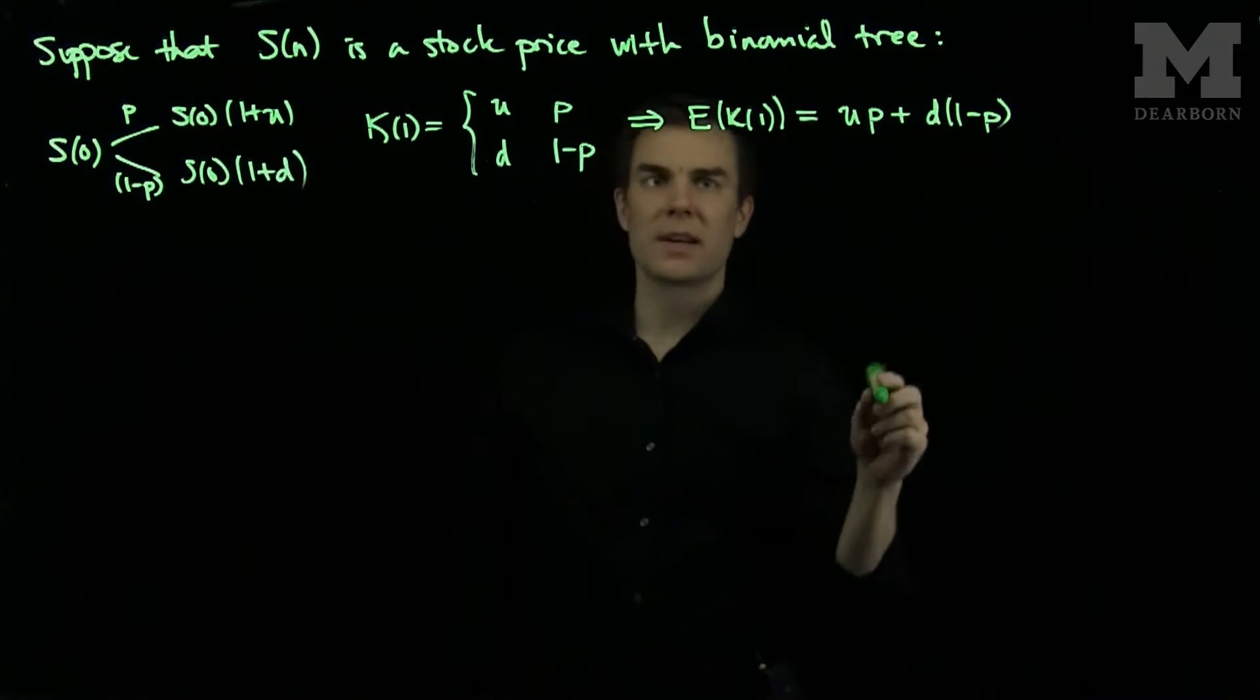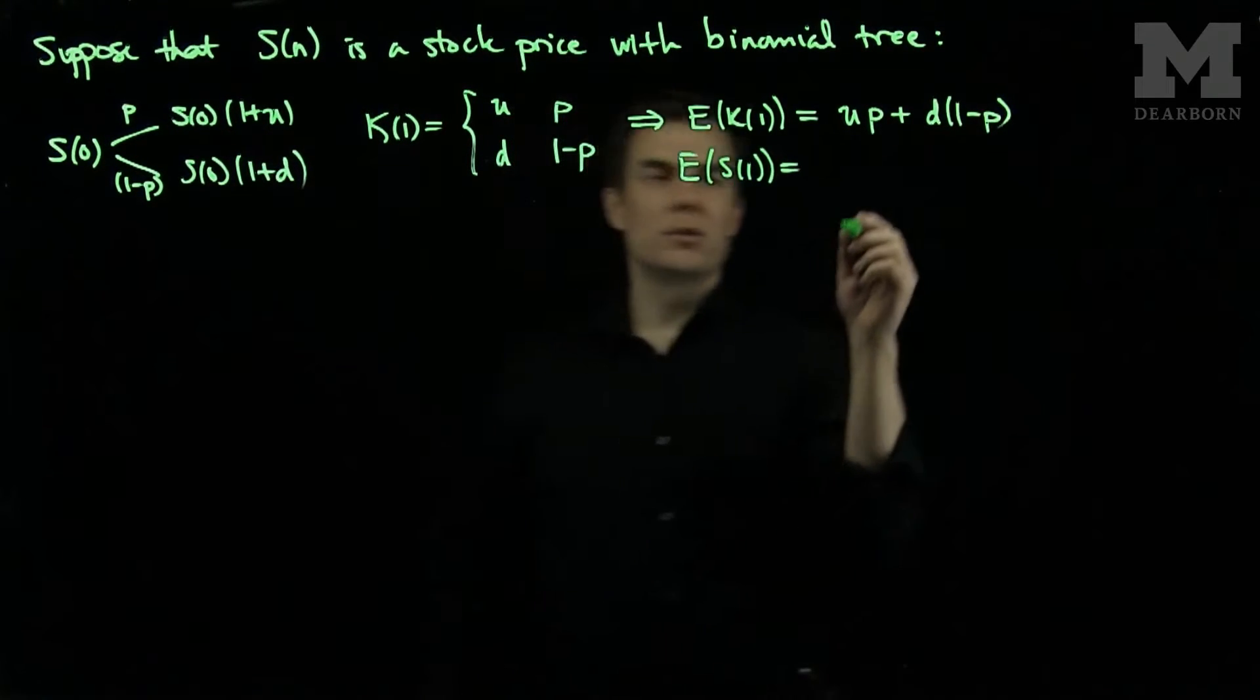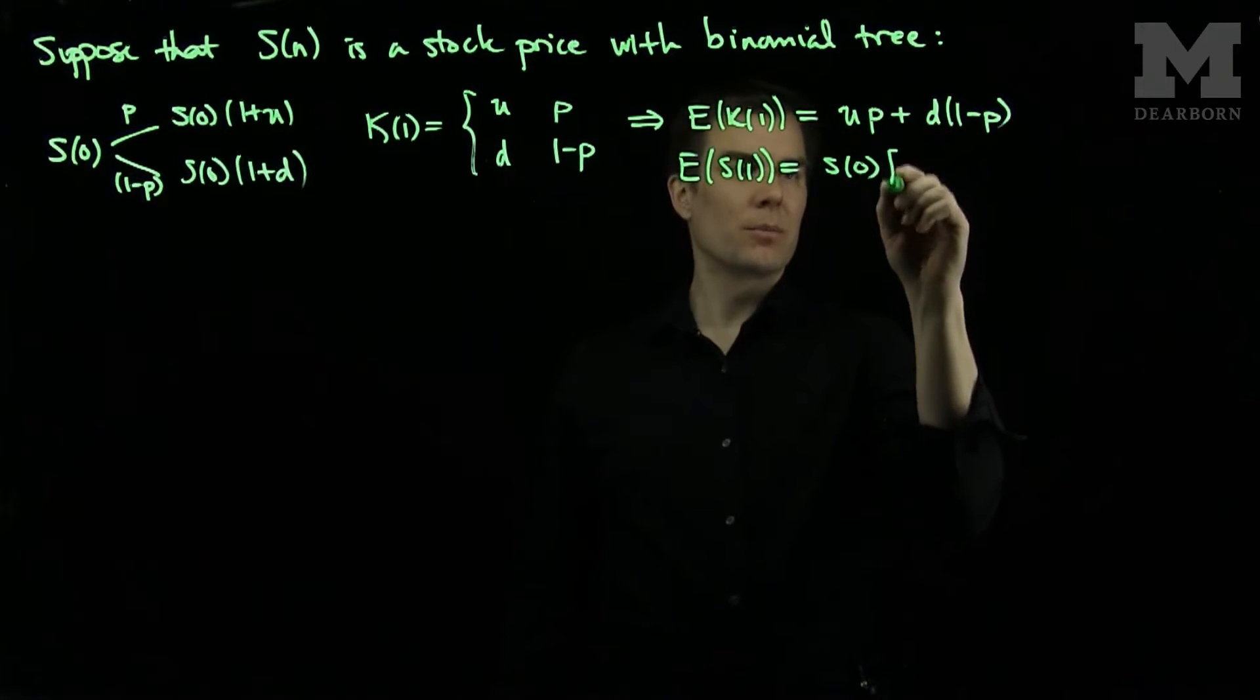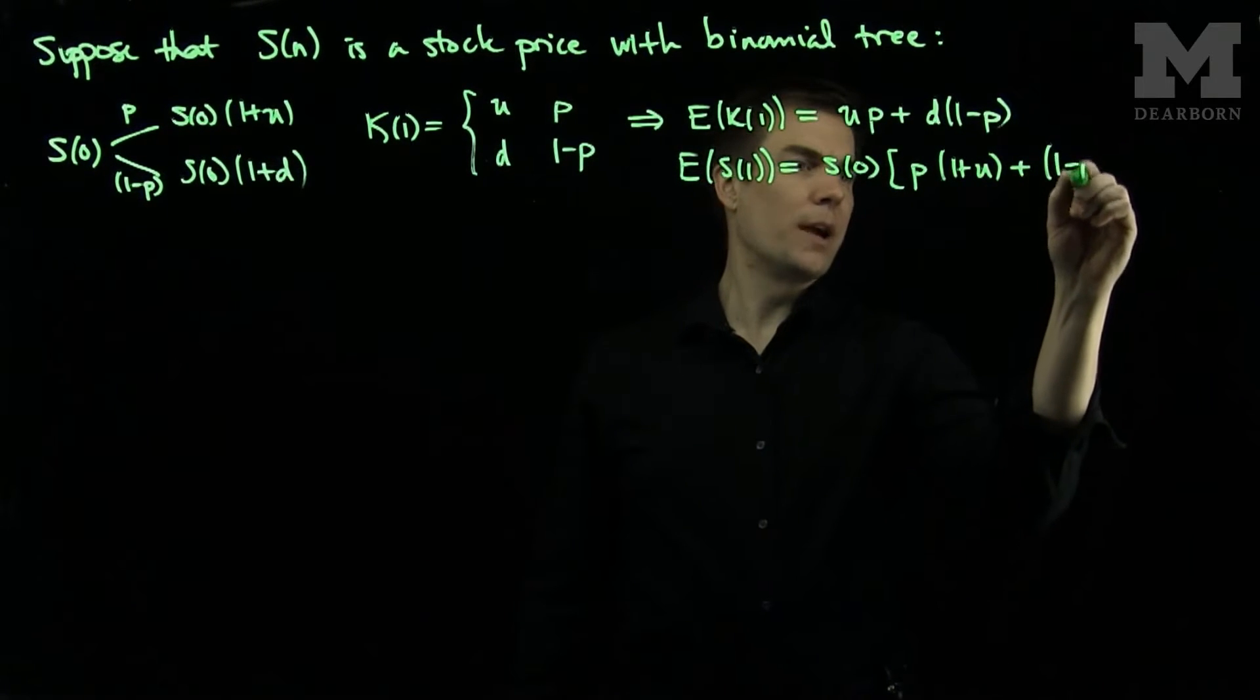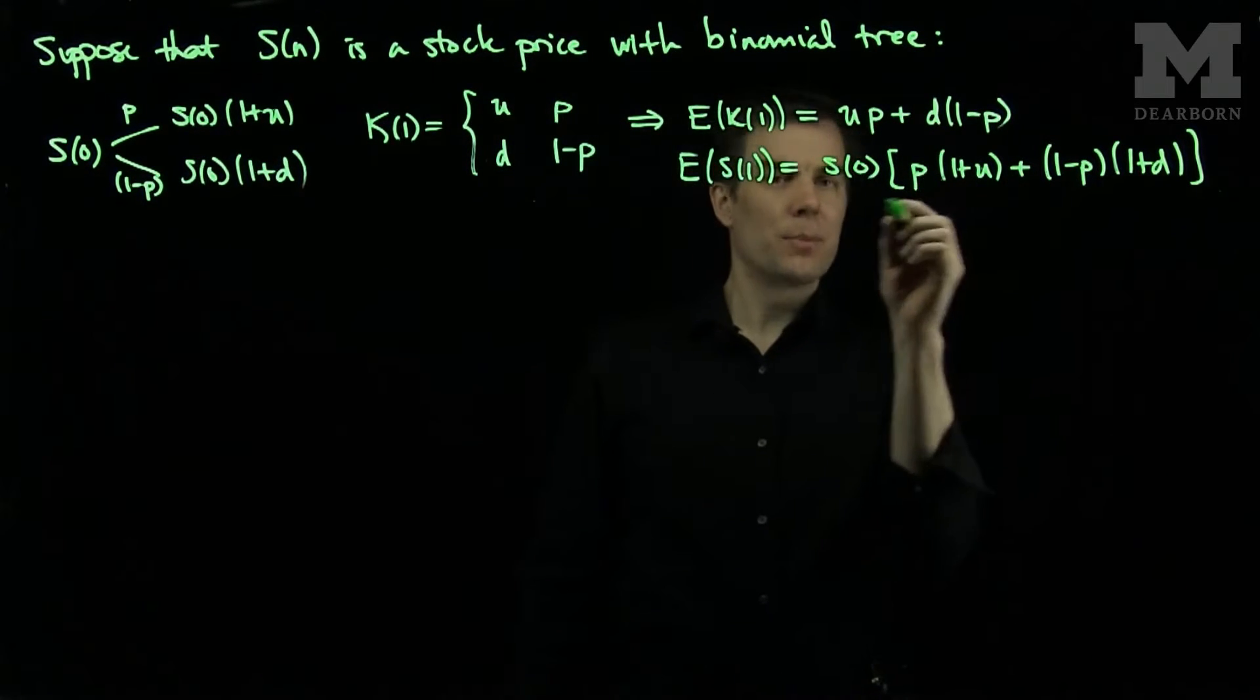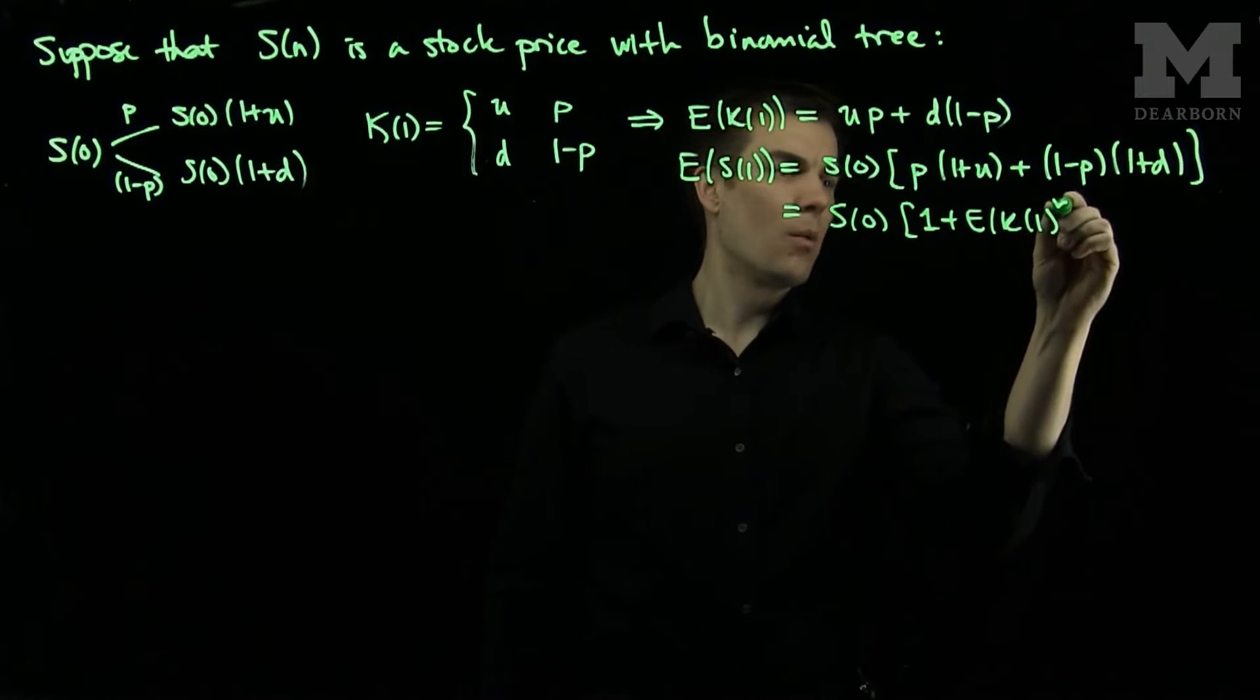And we can see from this that the expected value of S_1 is going to be S_0, that is a constant value. Then with probability P it will be (1+U), plus (1-P) and then (1+D). And what we can do is note that this will simplify to S_0 times [1 plus the expected value of K_1].